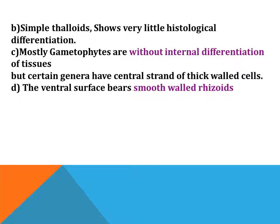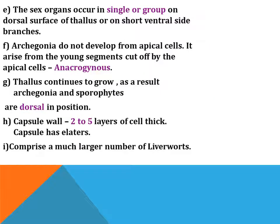These are simple thaloids and show very little histological differentiation; mostly gametophytes are without internal differentiation of tissues, but certain genera have a central strand of thick-walled cells. The ventral surface bears smooth-walled rhizoids. The sex organs occur singly or in groups on the dorsal surface of the thallus or on short ventral branches. The archegonia do not develop from apical cells; they arise from young segments cut off by the apical cells, and hence it is acrogynous. The thallus continues to grow, and as a result archegonia and sporophytes are dorsal in position.